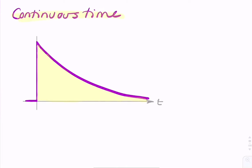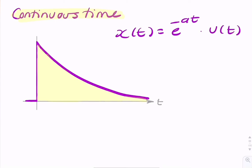If we have a continuous time signal, say x of t equals e to the minus at times the unit step, and I want to sample that, how can I then represent that as a function of n? How can I represent that as a discrete time signal?